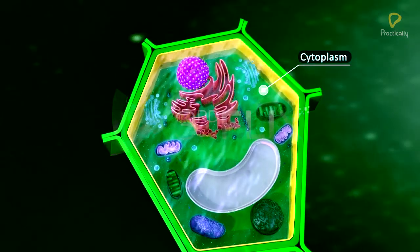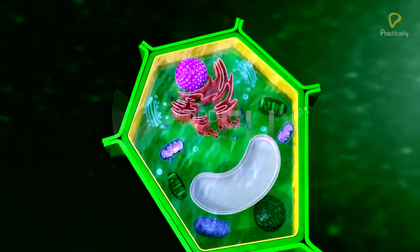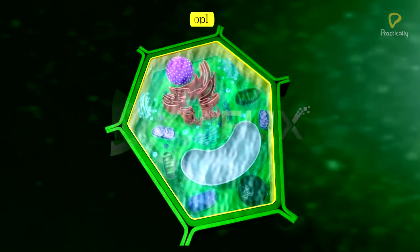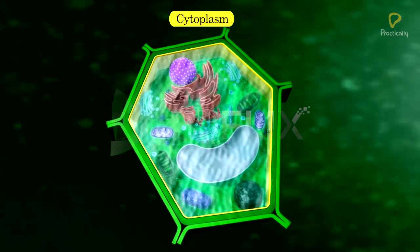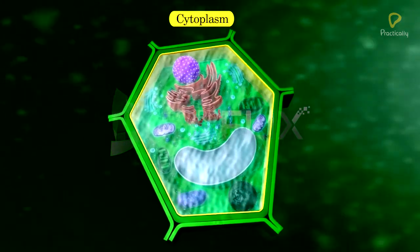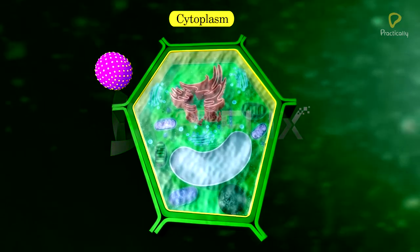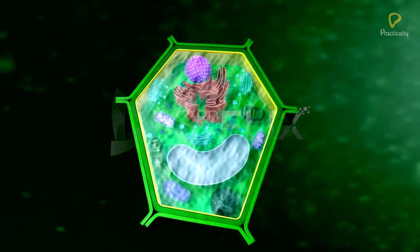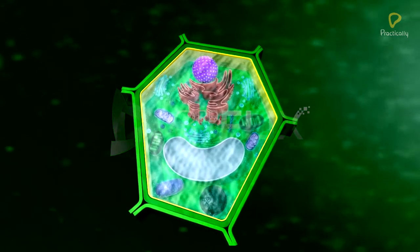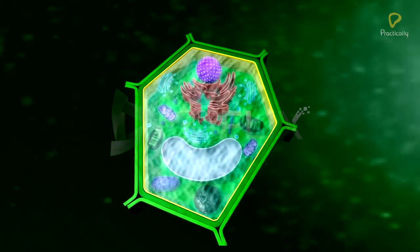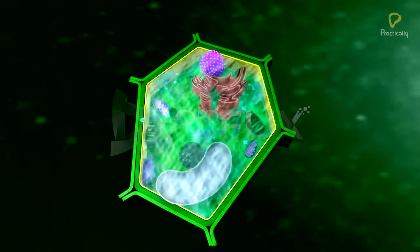Protoplasm includes both the cytoplasm and nucleus. Cytoplasm is the part of the protoplasm excluding the nucleus. Cytoplasm is further divided into cytosol or hyaloplasm, cell organelles, and ergastic substances.